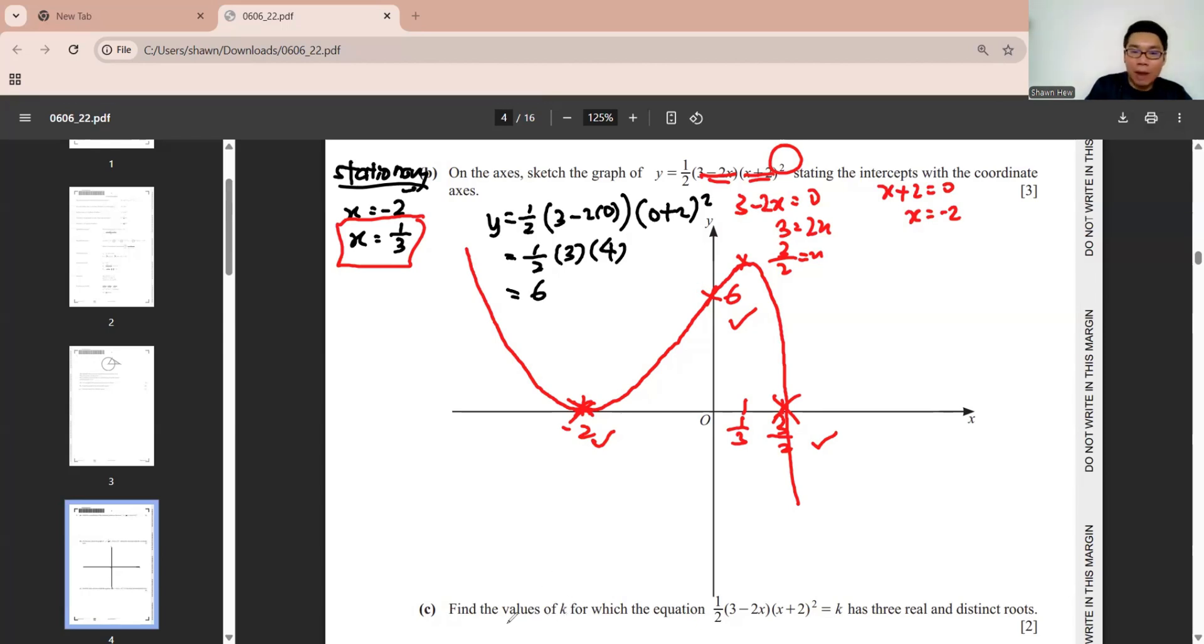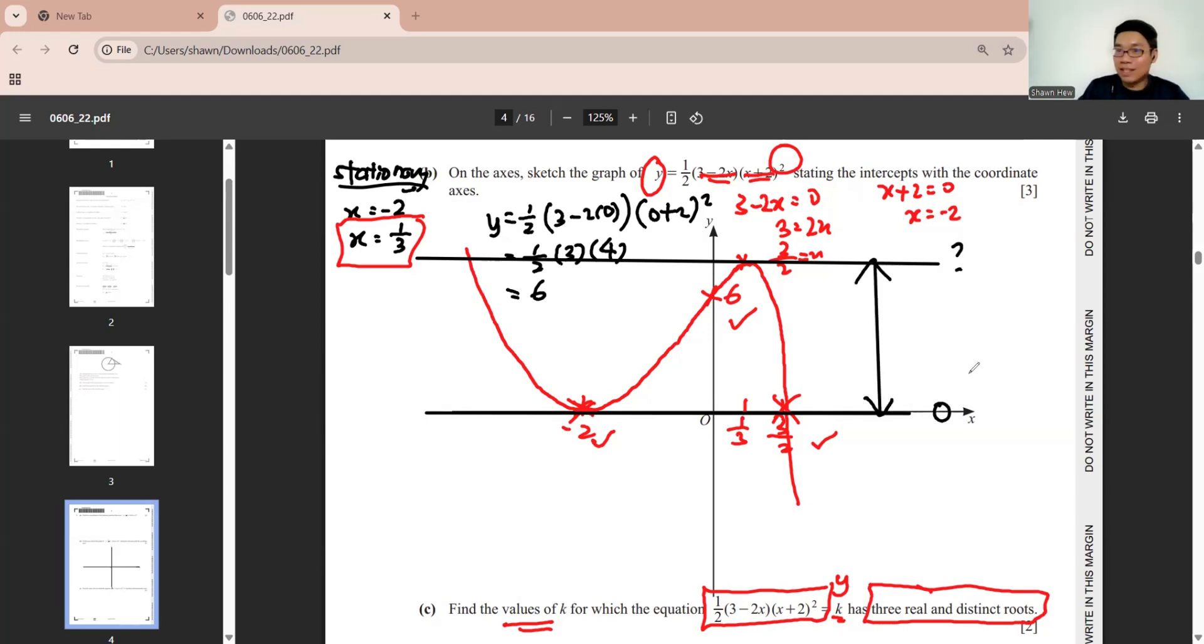Part C, they ask us to find the value of k. It has 3 real and distinct roots. k is our y. So we know it's a horizontal line. So we need to check which horizontal line will give you 3 real and distinct roots. When y is here, below this, it will have 3 real and distinct roots. It's actually in between these two. We already know this is 0. So in x equals to 1/3, it's 3/54. So k is in between 0 to 3/54.